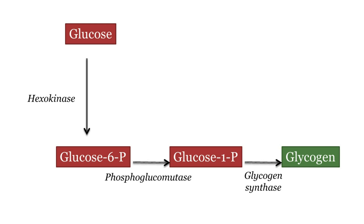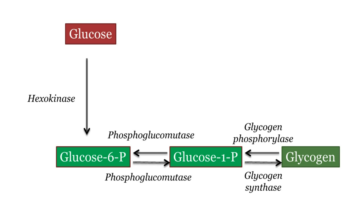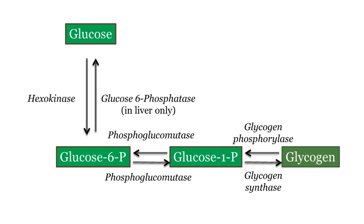Also remember, this reaction requires UTP. Now, degradation of glycogen also has a series of steps to get to glucose-1-phosphate, and the major enzyme is called glycogen phosphorylase. Glucose-1-phosphate is converted back to glucose-6-phosphate by the same enzyme, phosphoglucomutase. In muscle, glucose-6-phosphate would continue into glycolysis. However, only in the liver, it is converted back to glucose by glucose-6-phosphatase, which can then go into the bloodstream.